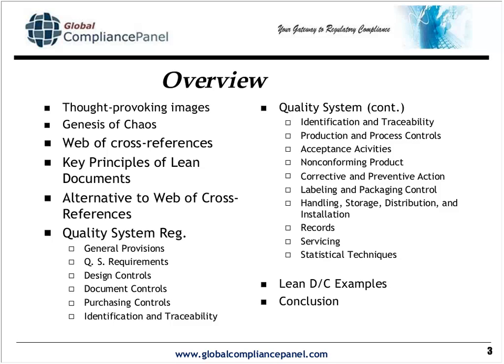We're going to then arrive at the key principles of lean documents and present an alternative to that web of cross-references. Once we have set the background for lean documents and lean configuration, we'll explore the various aspects of the quality system regulation — another name for 21 CFR Part 820 — and see how in each section the elements of lean configuration can be applied. Finally, we'll go through some lean doc and configuration examples, including a design control example section, and then arrive at a conclusion.